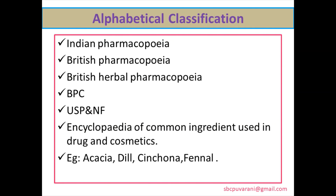Alphabetical classification: the drugs are arranged in the order of alphabets. Some of the books that use this system are Indian Pharmacopoeia, British Pharmacopoeia, British Herbal Pharmacopoeia, British Pharmaceutical Codex, United States Pharmacopoeia, and National Formularies.